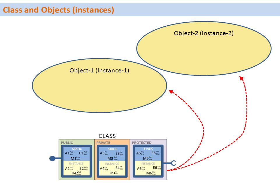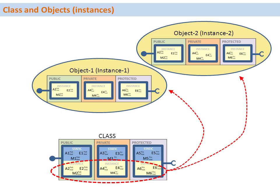What is very important to understand is that when we create objects from a class, only the instance components of the class are replicated to these objects. So object 1 has its own set of instance components and object 2 has its own set of instance components — these are independent of each other. On the other hand, static components belong to the class and can be accessed by the objects. Object 1 and object 2 can access the static components, but these static components are common to all objects — there is only a single set of static components, whereas instance components are available for each object individually.